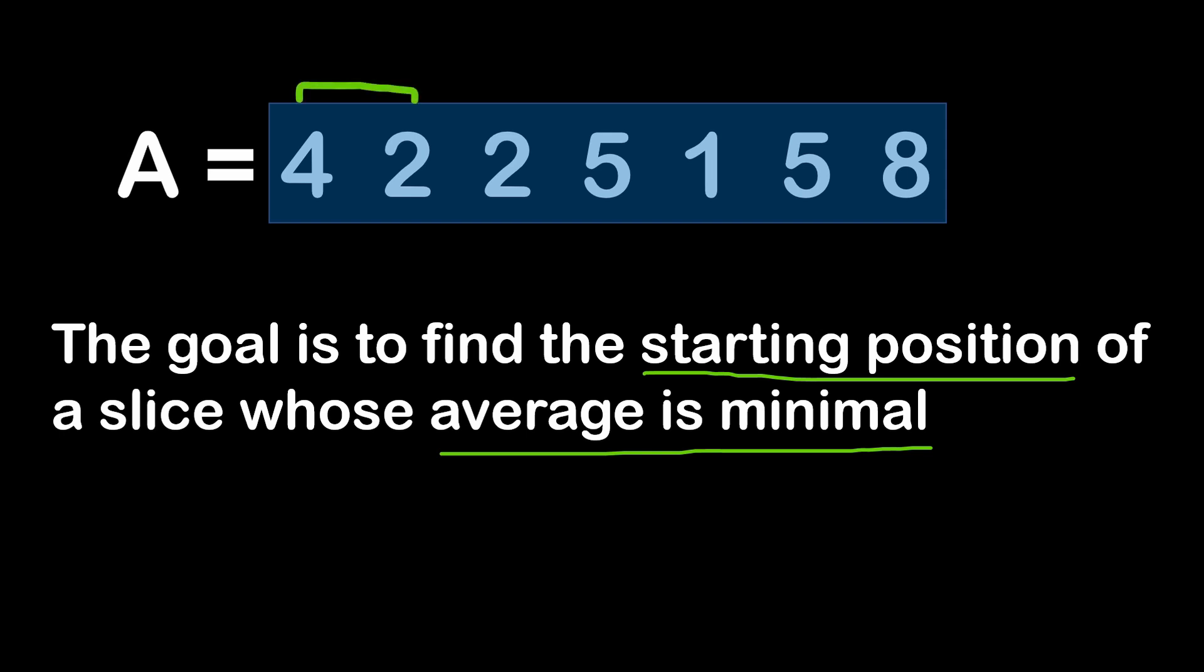In other words, we have to check each and every possible slice inside of this array, calculate the averages of all the slices, then return the starting index or position of the slice with the minimal average.